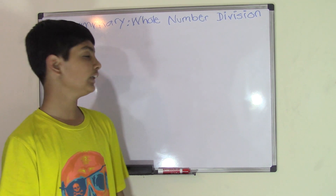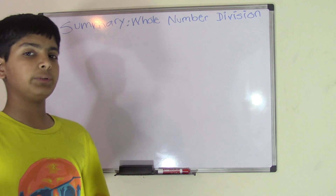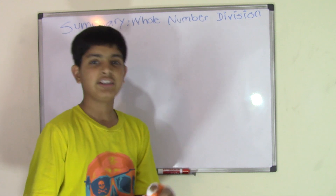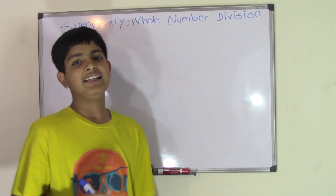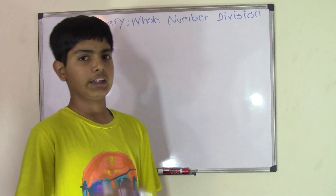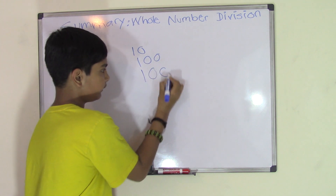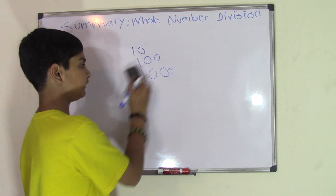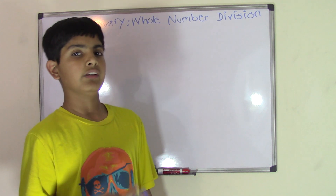Hey guys, today I'll be doing the summary for the chapter topic: whole number division. When we're doing whole number division, we'll be focusing on doing division by ten, a hundred, and a thousand. I'll also cover the topics of zeros in quotients, and one-digit and two-digit quotients.